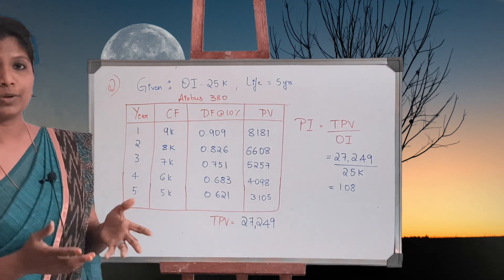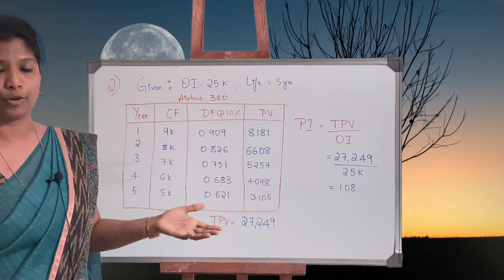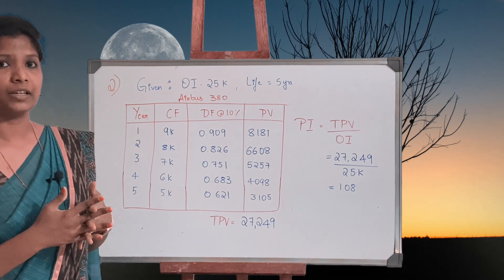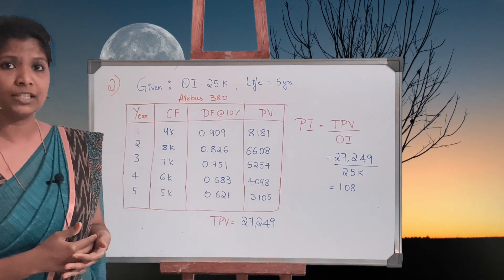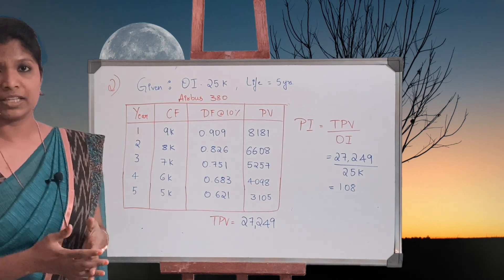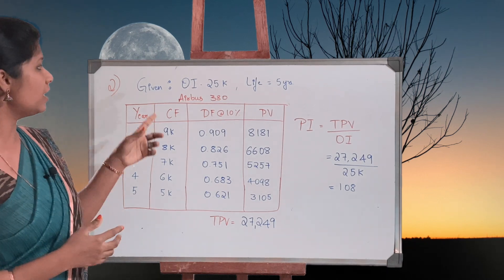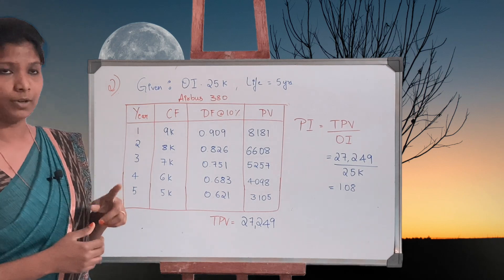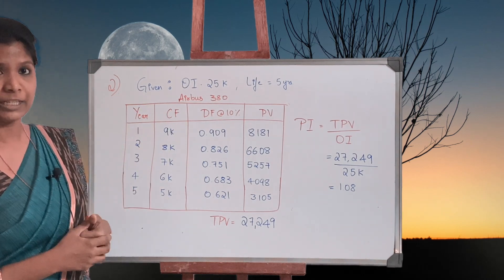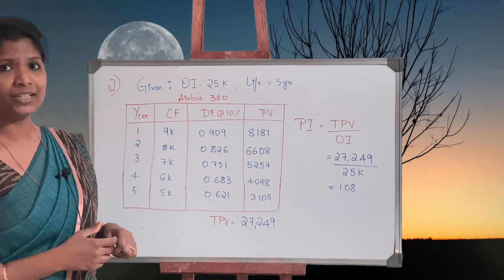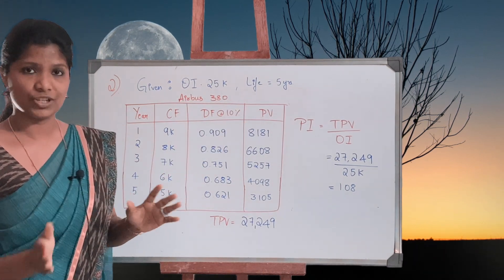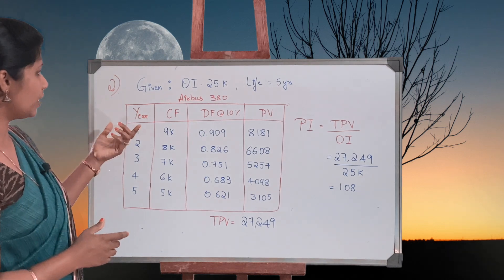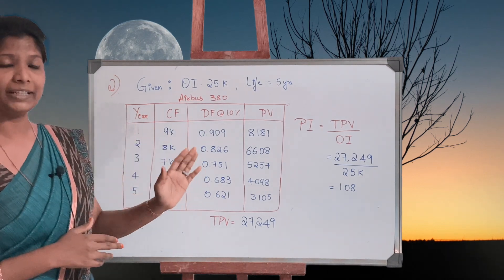The question mentions about two Airbus projects and asks to check based on the Profitability Index whether or not we should consider the investment. The given details about the first project is Airbus 380, where the original investment is 25,000 and the life was 5 years. So we are going to solve both the machines separately.